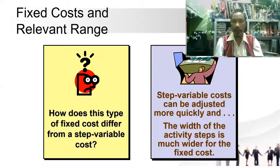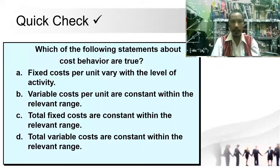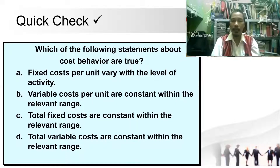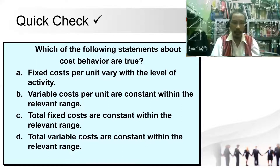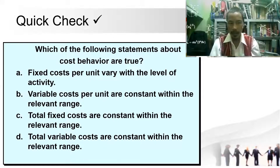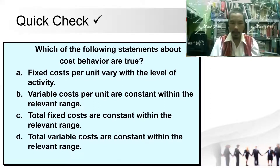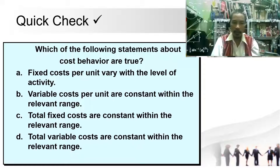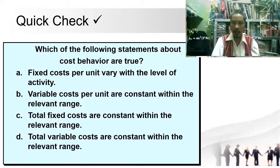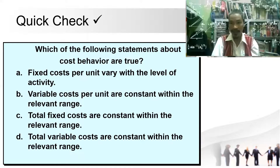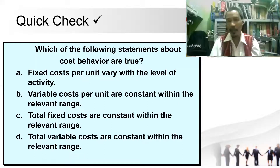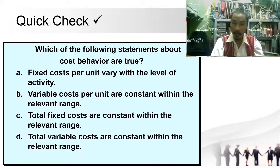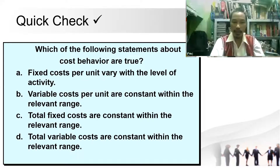Let's check our knowledge. Which of the following statements about cost behavior are true? (a) Fixed cost per unit varies with the level of activity. (b) Variable cost per unit is constant within the relevant range. (c) Total fixed cost is constant within the relevant range. (d) Total variable cost is constant within the relevant range. The answer is a, b, and c, as total variable cost is not constant — it changes with activity.